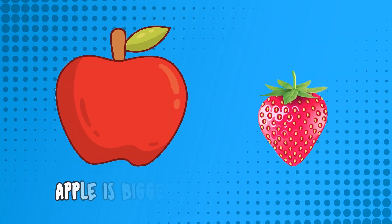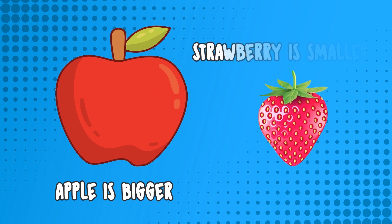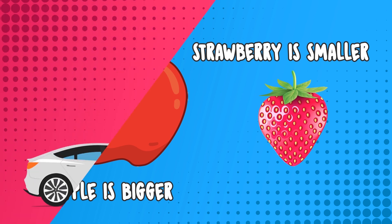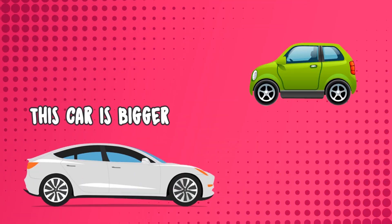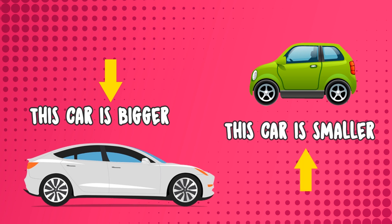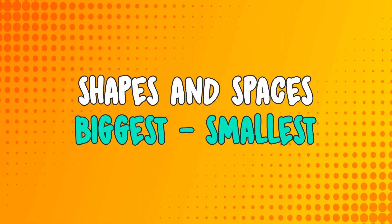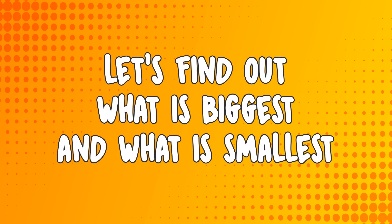The apple is bigger. The strawberry is smaller. This car is bigger. This car is smaller. Shapes and Spaces: biggest and smallest. Let's find out what is biggest and what is smallest.